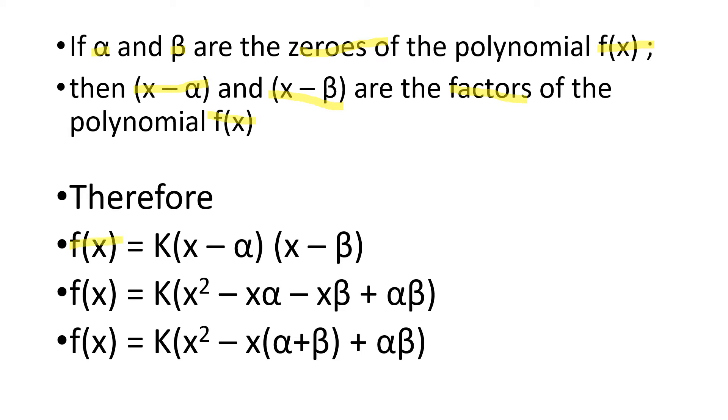f of x will be equal to k multiplied by x minus alpha multiplied by x minus beta, where k is the constant. Simplifying it, you will eventually get to f of x equals k multiplied by x square minus x multiplied by alpha plus beta plus alpha beta.